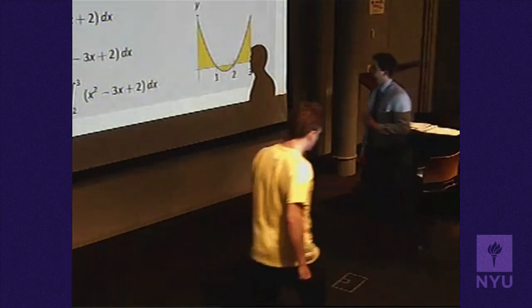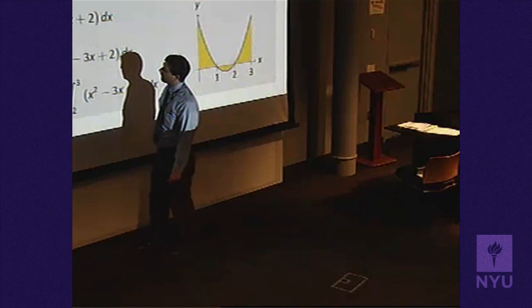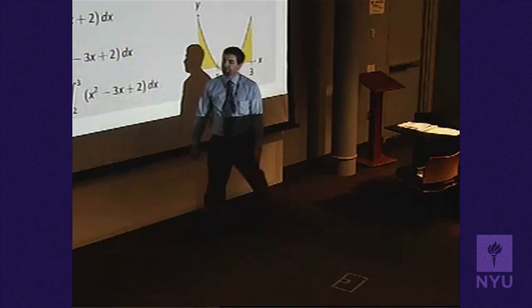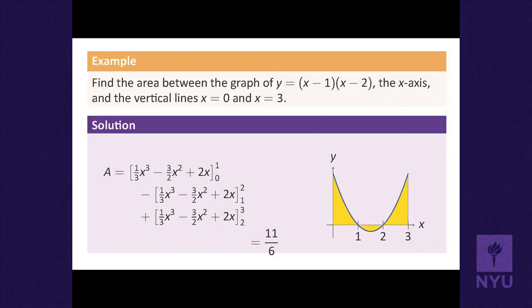The antiderivative is (1/3)x³ - (3/2)x² + 2x. Each piece has area 5/6, 1/6, and 5/6. Adding them correctly gives 11/6. If you forget the sign on the middle piece and just subtract instead of negate, you get 9/6 = 3/2 — that's the common wrong answer.